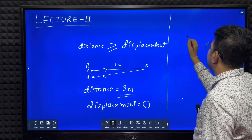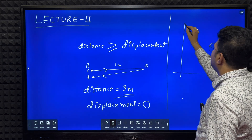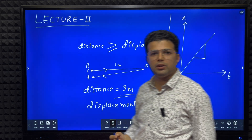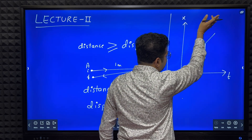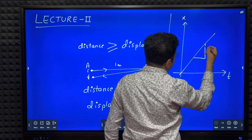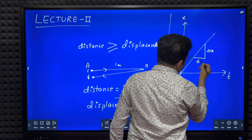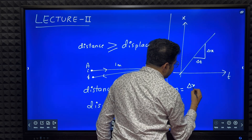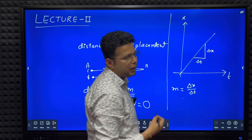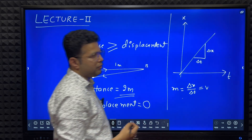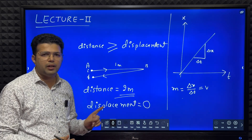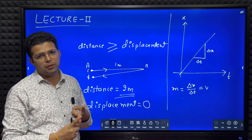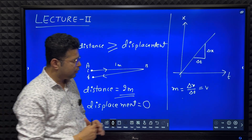Then we learned about the position-time graph. The important point is: if you calculate the slope of the position-time graph — slope m equals delta x by delta t — this is displacement divided by time, which is velocity. So slope of the position-time graph gives velocity. Speed means distance by time; velocity means displacement by time. Both have units of meter per second.